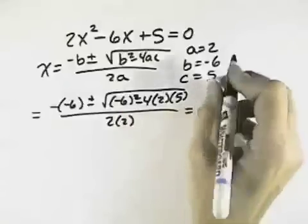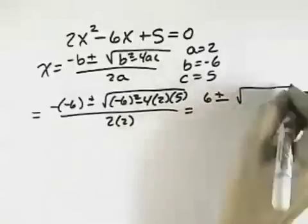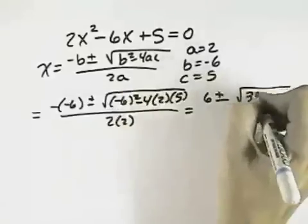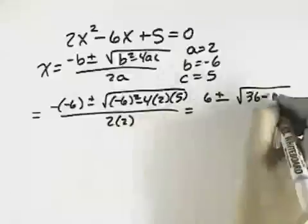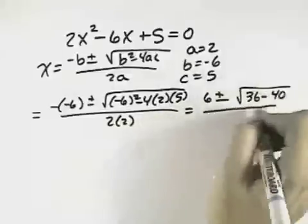So that will equal the opposite of negative 6 is 6 plus or minus the square root of negative 6 squared is 36, minus 4 times 2 times 5 is 40, all over 4.